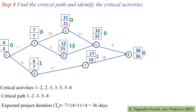The fourth step is to find the critical path and identify critical activities. A critical activity is any activity where the total float equals 0. Here, the critical activities are: 1 to 2 (total float 0 at both events), 2 to 3 (total float 0 at events 2 and 3), 3 to 5 (total float 0 at events 3 and 5), and 5 to 8 (total float 0 at events 5 and 8).